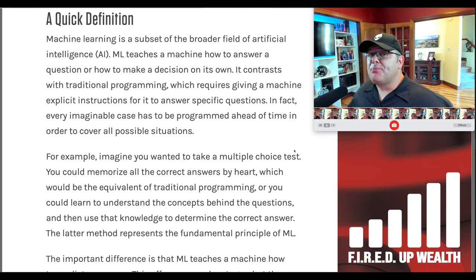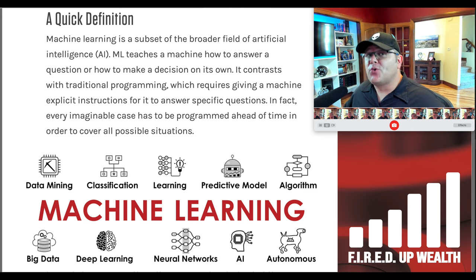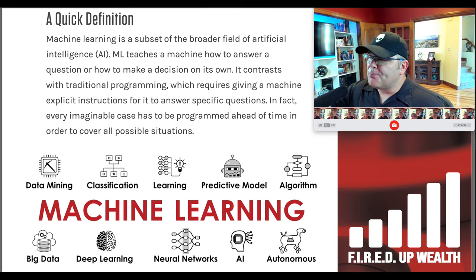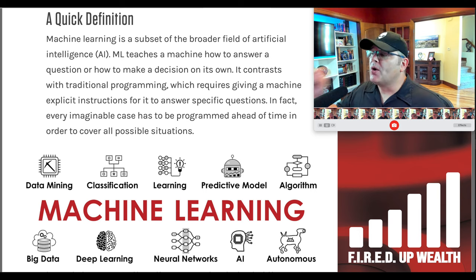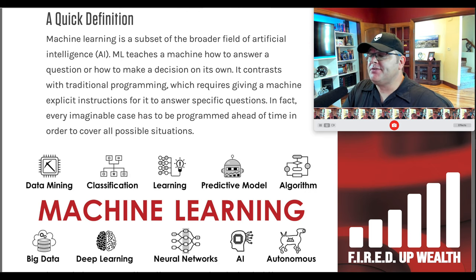On the last video I broke down artificial intelligence and explained the different types. We covered machine learning from a high level — I want to go a little deeper on that today because it is very important. Machine learning is a subset of the broader field of artificial intelligence. ML teaches a machine how to answer a question or make a decision on its own, contrasting with traditional programming which requires explicit instructions for every possible case.